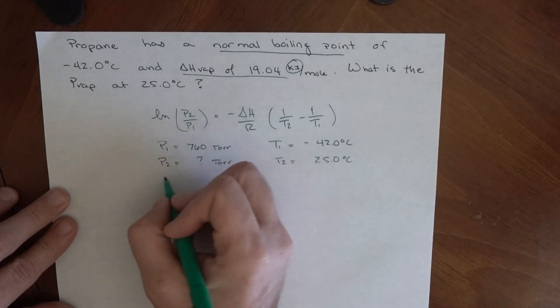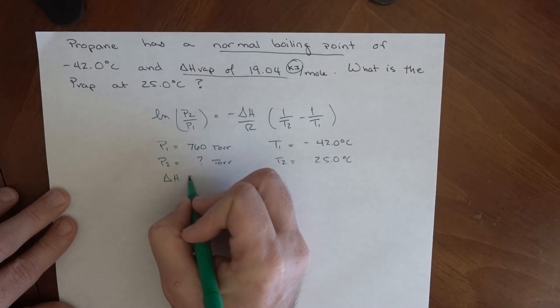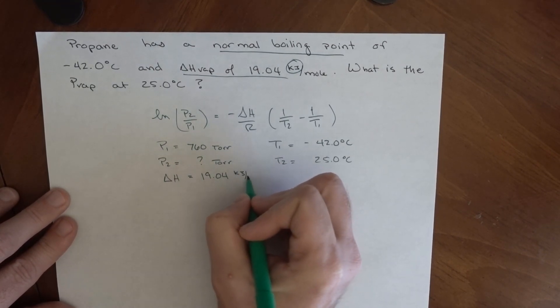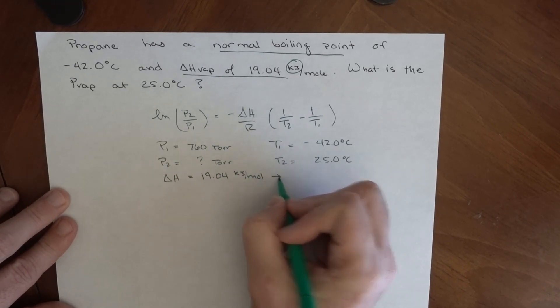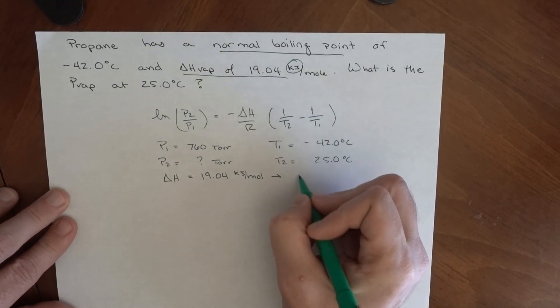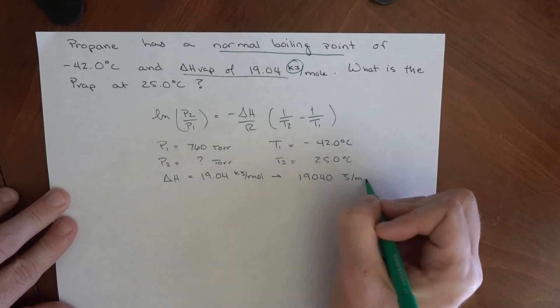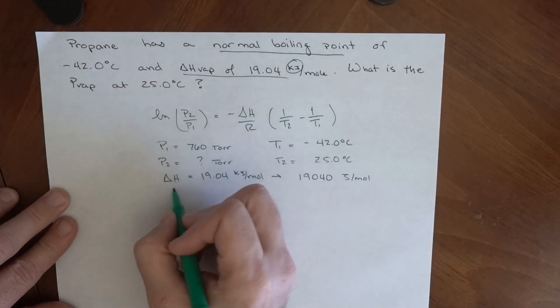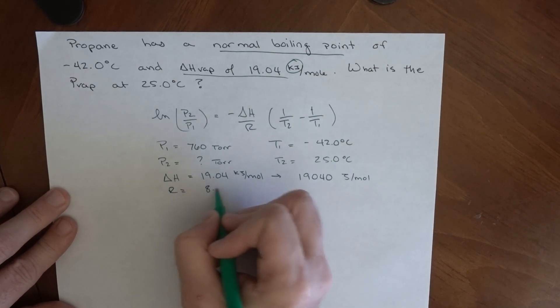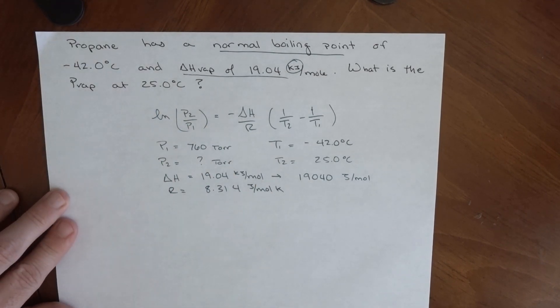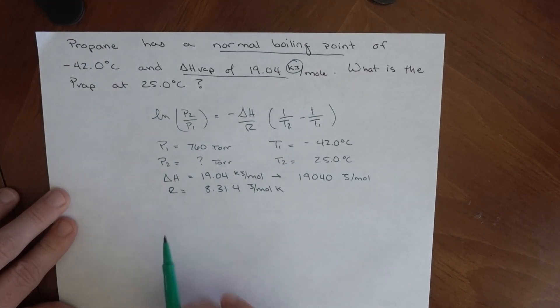We're also told that ΔH is 19.04 kilojoules per mole. That really needs to be in joules if we're going to use traditional units for R. So 19,040 joules per mole. And R is a constant we know: 8.314 joules per mole Kelvin. So we've got all these things. It's just a matter of plugging everything in.